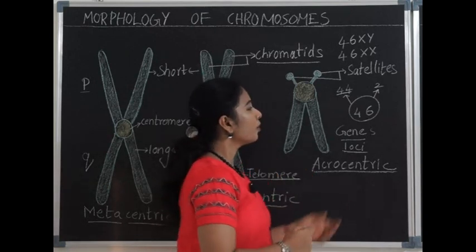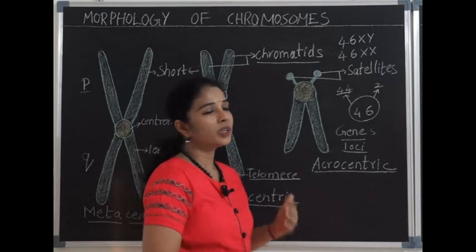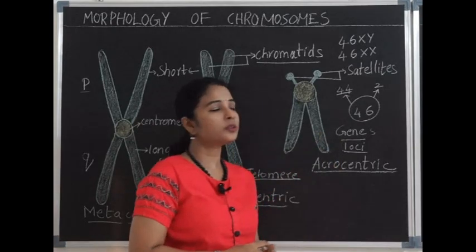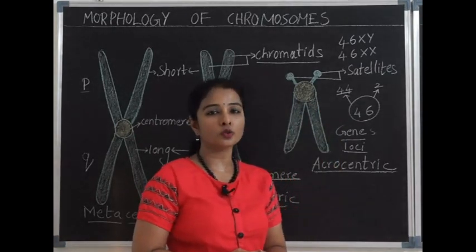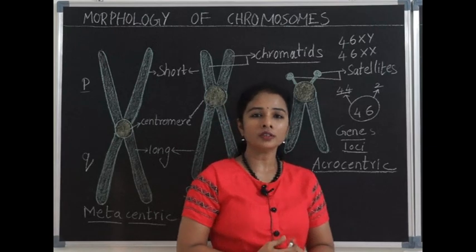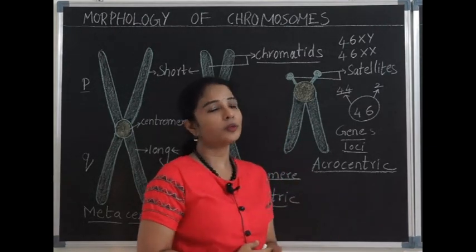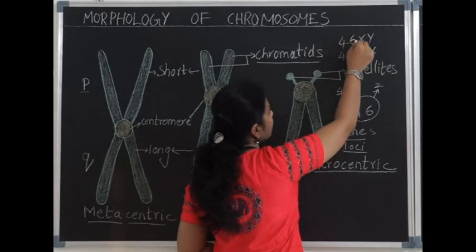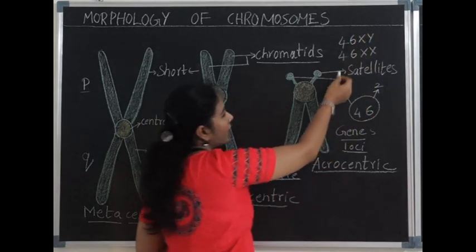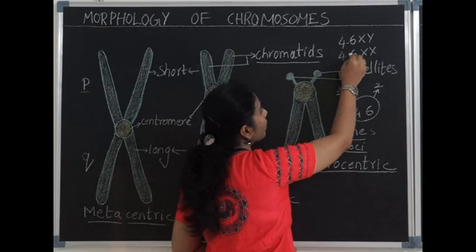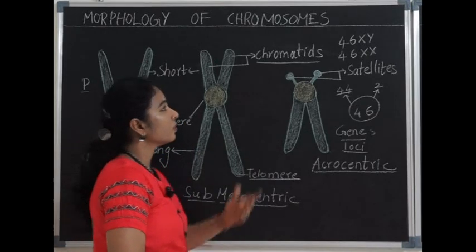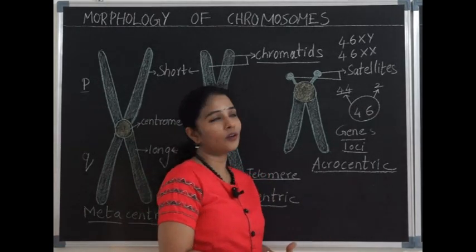In humans, the number of chromosomes are 46 chromosomes, means 23 pairs of chromosomes. Out of these 23 pairs, 22 pairs of chromosomes or 44 chromosomes are called autosomes and one pair or two chromosomes are called allosomes or sex chromosomes. To write the chromosomal complement for a male, we write 46, that is the number of chromosomes, and sex chromosomes are X and Y. In female, the chromosomal complement is written as 46 and XX which represents the sex chromosomes or allosomes.